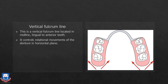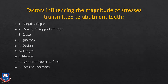The third fulcrum line is the vertical fulcrum line — a vertical axis passing through the center of the patient's head — where denture movement is appreciated in the horizontal plane as rotatory or translatory motion. These three fulcrum lines must all be considered in RPD biomechanics. Other key factors include the quality of the residual alveolar ridges, the clasp assembly — including its quality, design, length, and material — the abutment tooth surface type, and the occlusal harmony of the RPD with the opposing arch.